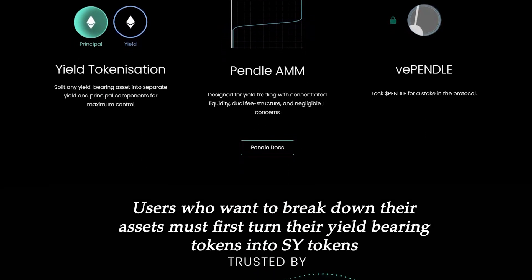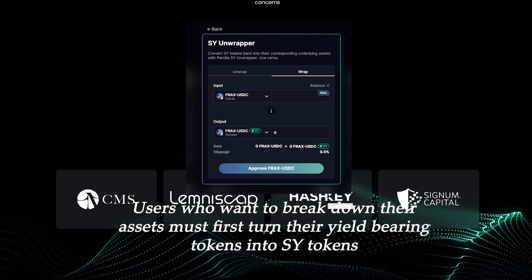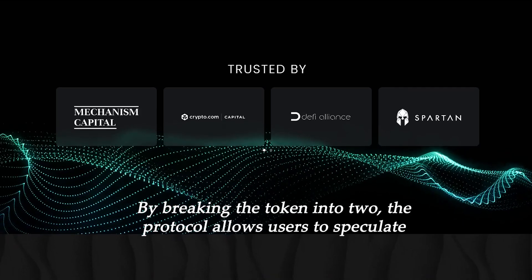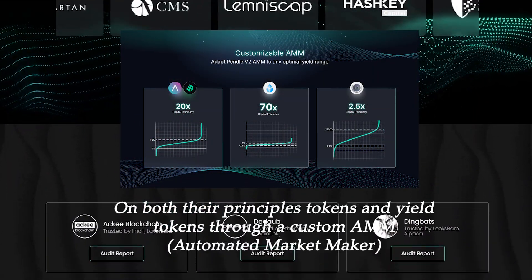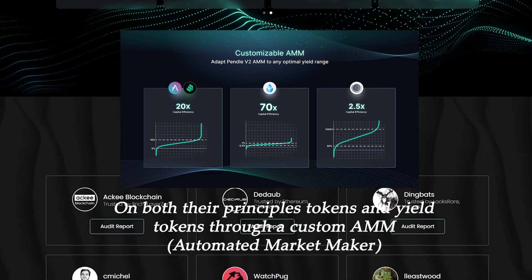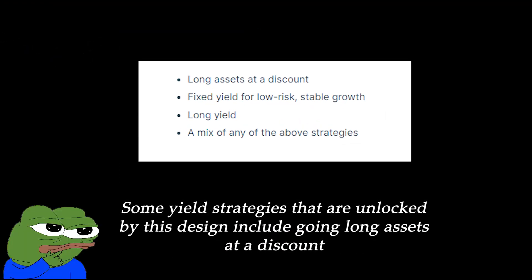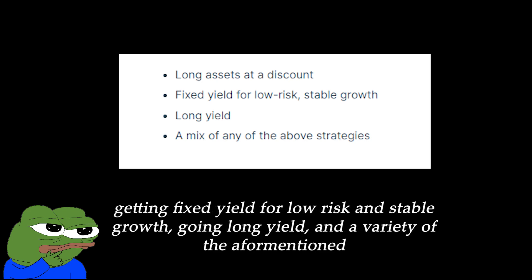Users who want to break down their assets must first turn their yield-bearing tokens into these SY tokens. Through breaking the token into two, the protocol allows users to speculate on both their principal tokens and yield tokens through a custom AMM. Some yield strategies that are unlocked by this design include going long assets at a discount, getting fixed yield for low risk and stable growth, going long yield, and a variety of the aforementioned combined.